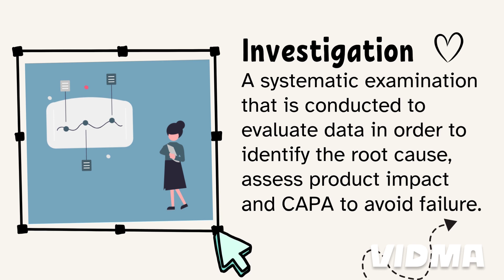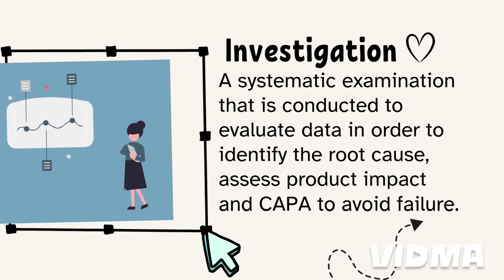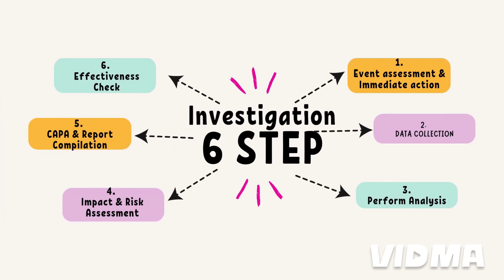It also helps assess the product impact and identify the CAPA to prevent future failures. Next, we will see the six-step approach for investigation: first is event assessment and immediate actions, second is data collection, third is performing the analysis, then impact and risk assessment, then deciding the CAPA and report compilation, and last is the effectiveness check.